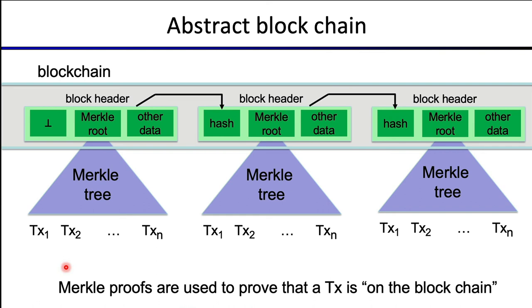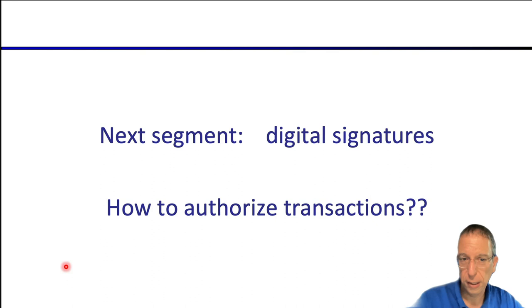This is the abstract view you should have of what a blockchain is. That's all I wanted to say about cryptographic hash functions. In the next segment, we're going to talk about digital signatures and see how they're used to authorize transactions.